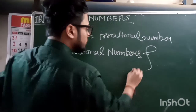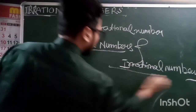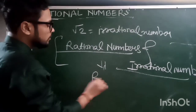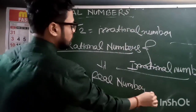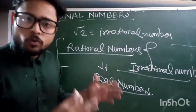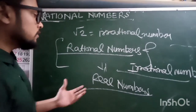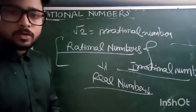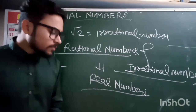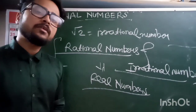The combination of rational numbers and irrational numbers is called real numbers. No rational numbers are irrational numbers, and no irrational numbers are rational numbers — but together, the set of rational and irrational numbers forms the set of real numbers. That's all for today; we will meet in the next video.